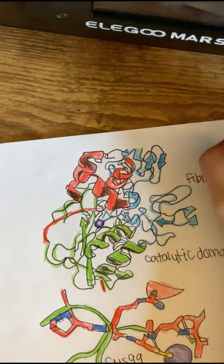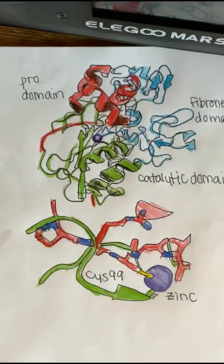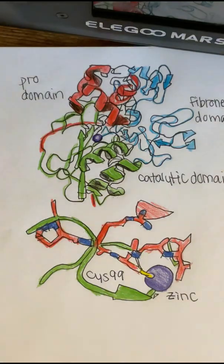The propeptide domain has around 80 amino acids, the catalytic has around 170, and the C-like terminal has an estimated 200 amino acids.